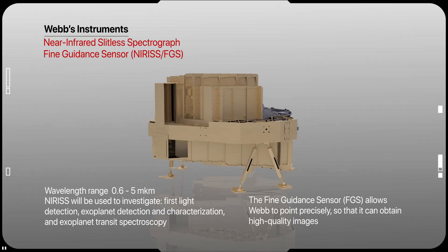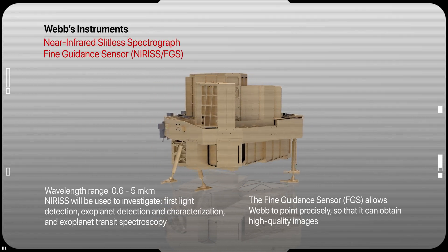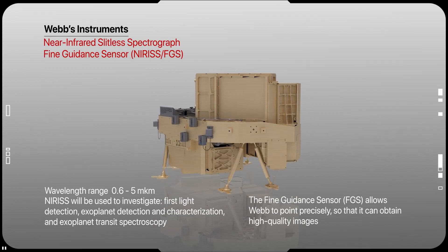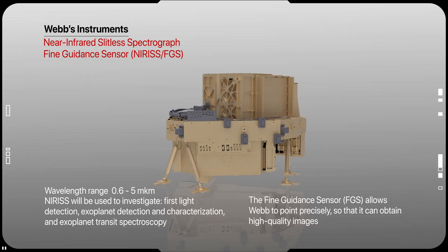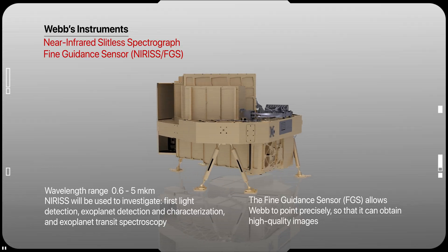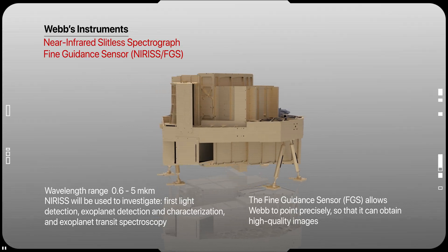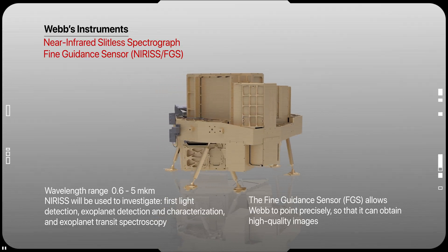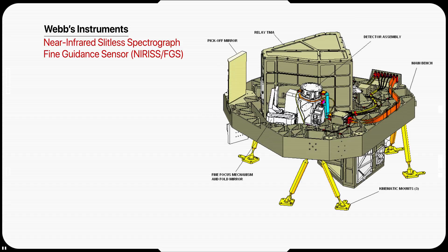Near-Infrared Imager and Slitless Spectrograph: it provides near-infrared imaging and spectroscopic capabilities. As the only instrument equipped with an aperture mask, this spectrograph has the unique ability to capture images of bright objects at a resolution greater than the other imagers. It operates over a wavelength of 0.6 to 2.5 micrometers.